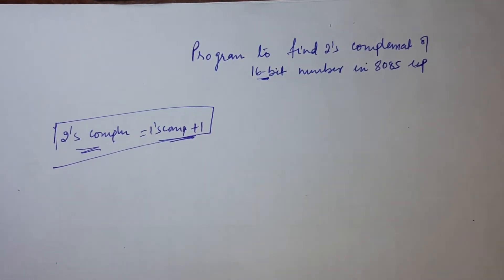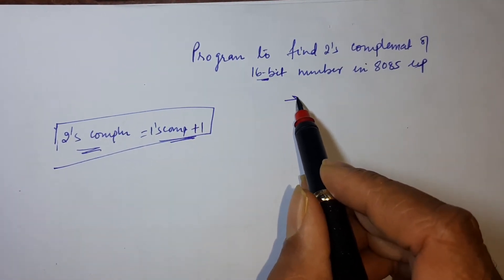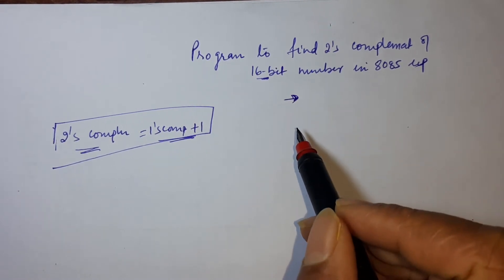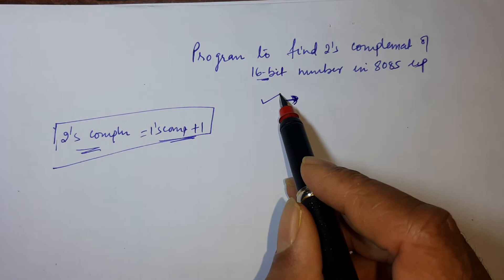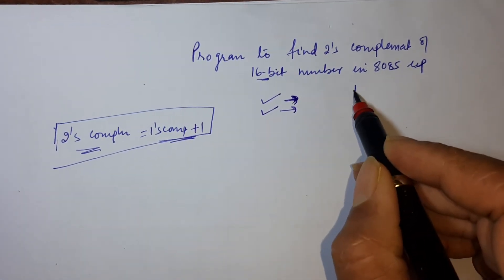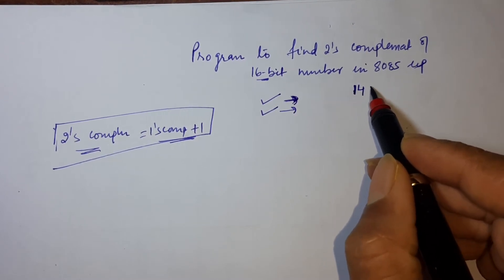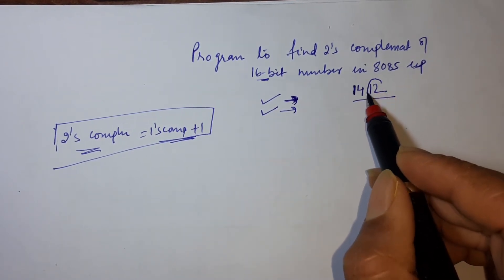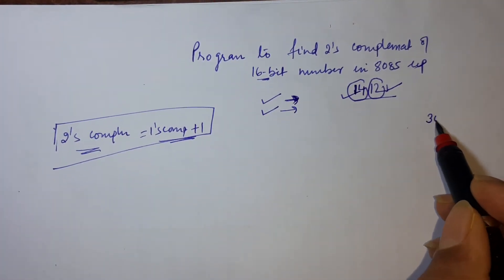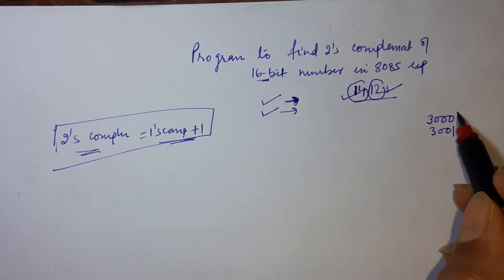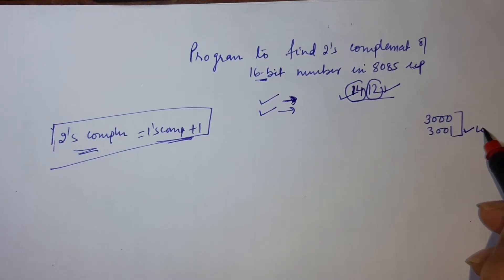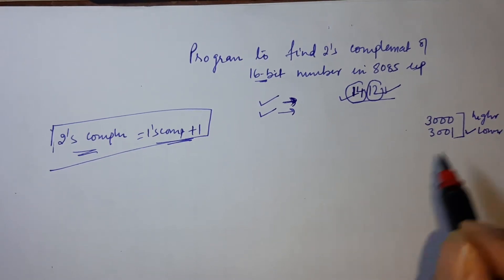To store a 16-bit number in 8085, we require 2 memory locations — the lower byte is stored at one location and the higher byte at another. So our 16-bit number is stored across two memory locations: lower byte here and higher byte at the next location.